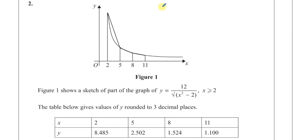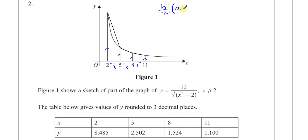The area of a trapezium is the distance between the parallel sides — in this case these distances here, which are 3 — divided by 2, times the sum of the parallel sides. The parallel sides are the y values of these points. This is the general formula for the area of a trapezium.